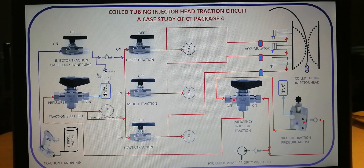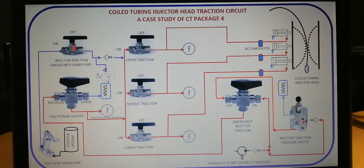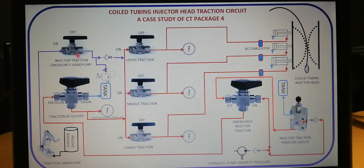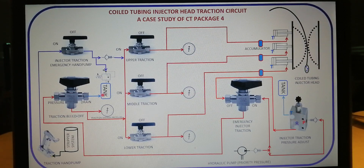Finally, Phase 3 of this presentation explains traction control using the injector traction emergency hand pump on and off two-way valve in conjunction with this manual hand pump. Mostly, this valve is used in an emergency condition like loss of hydraulic from the main injector traction pressure adjust or power pack failure.